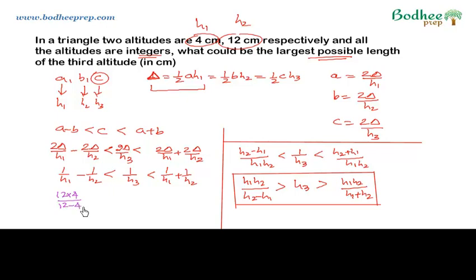So 12 × 4 divided by 12 minus 4, h3, and this is 12 × 4 divided by 12 plus 4. On further solution, this particular portion will be 48/8, which comes out to be 6, h3.